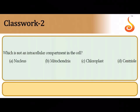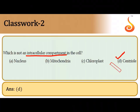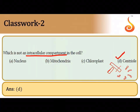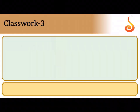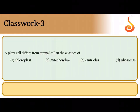Which is not an intracellular compartment? The answer is the centriole or centrosome. The centriole has two rod-shaped structures placed at right angles, with a cartwheel-like structure in cross-section. Each pair of centrioles is called a diplosome, surrounded by pericentriolar material, also called kinoplasm or centroplasm. A centriole is not a compartment. A plant cell differs from an animal cell in the absence of centrioles.